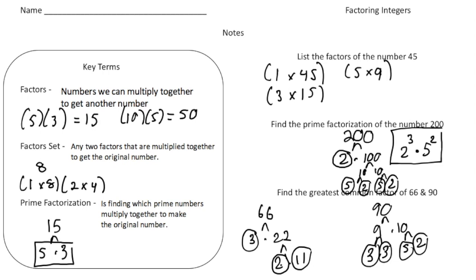Now we use the prime factorizations to figure out the greatest common factor. You take all the factors that they have in common. There's one 3 in 66 and one 3 in 90, so cross those off — that's a common factor of 3. We also have a 2 in each, so that's another common factor. There's an 11 in 66 but no 11 in 90. There's an extra 3 in 90 but no match in 66. And there's a 5 in 90 but no 5 in 66. So the only common factors are a 3 and a 2, and 3 times 2 gives us 6. So 6 is the greatest common factor.